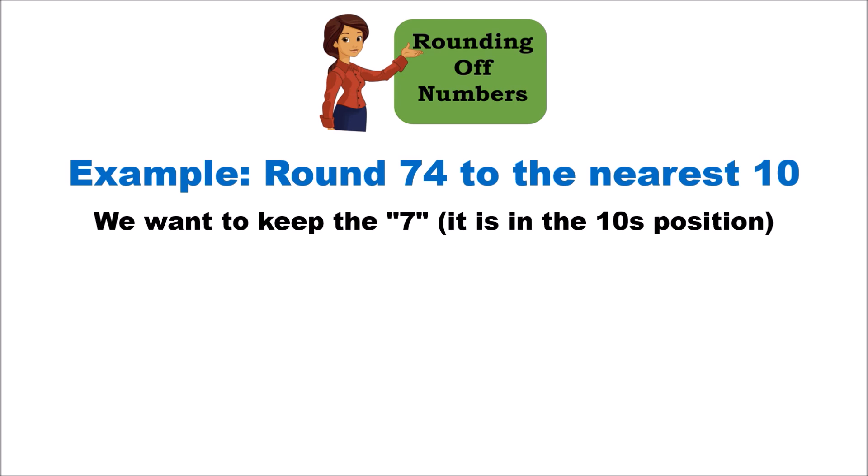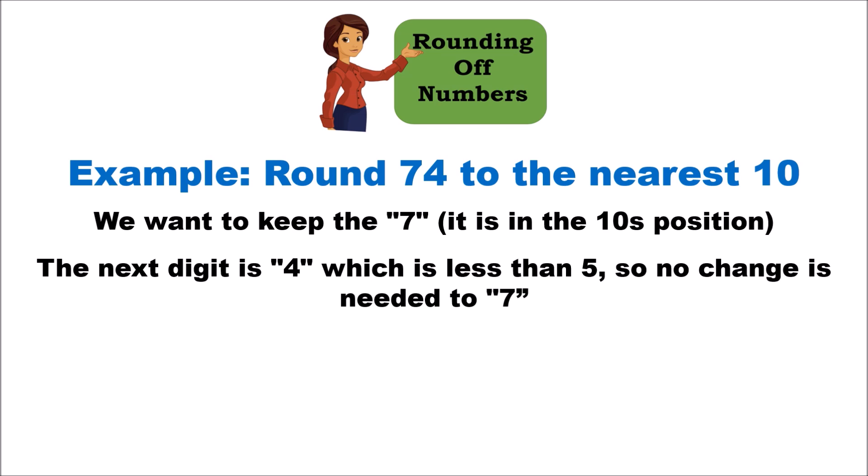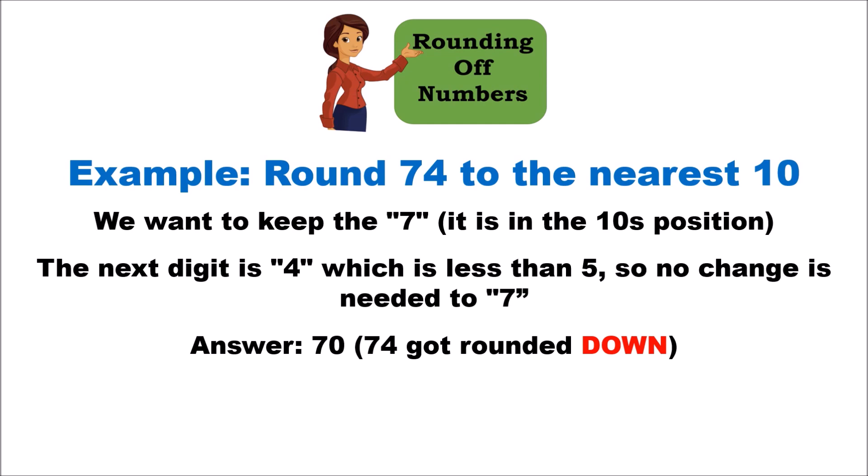Since seven is in the tens place, we keep seven. We then look at the next digit to the right, which is four. Four is less than five, so we do not change the seven — we leave it as it is. So rounding 74 to the nearest ten gives us 70; it gets rounded down to 70.